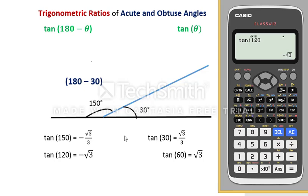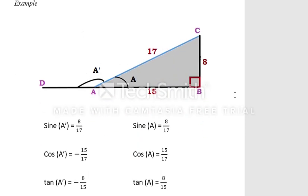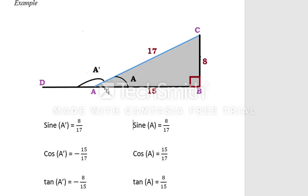Now after learning these conclusions from sine, cosine, and tangent, we can apply these rules to an example. Here we have a right-angle triangle on the right-hand side and a black line which is part of this triangle. This line is divided between two angles: angle A and angle A dash.